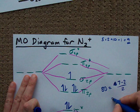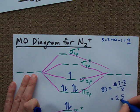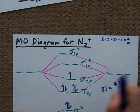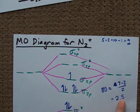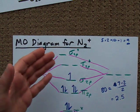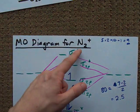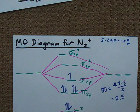When I do that on my calculator, I've got a bond order of 2.5. A bond order with a .5 in it isn't super stable, and so N2+ probably isn't super stable.